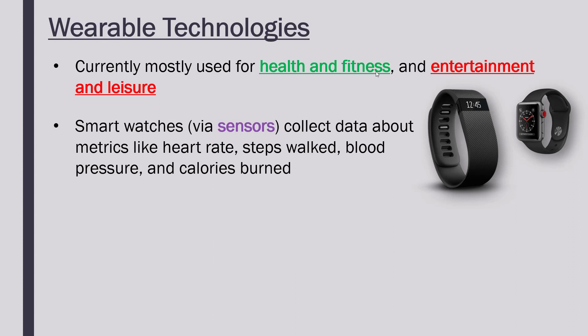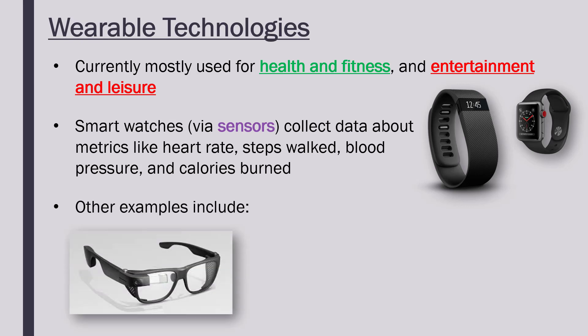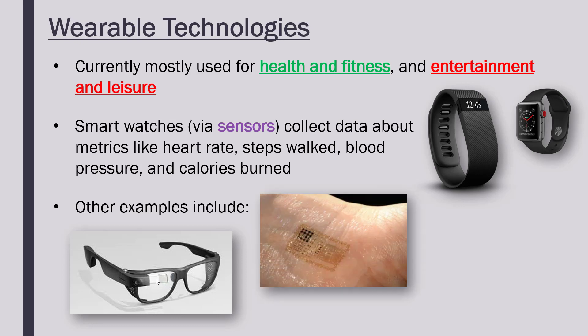There are not many good examples beyond smart watches, but some do include glasses. This was Google Glass from a few years ago — it launched but didn't really take off. The idea was it looks like a normal pair of glasses, but there's a processor built in and a small screen which can show you information, plus a camera that can collect data like what you're looking at. You could also use it for entertainment, maybe playing a video on the little screen while on the train.